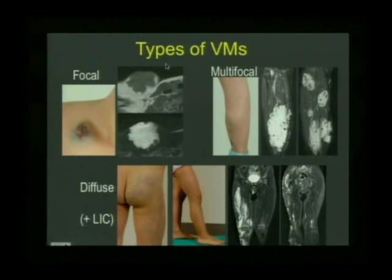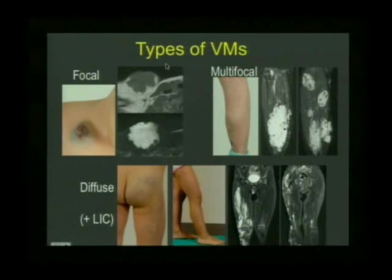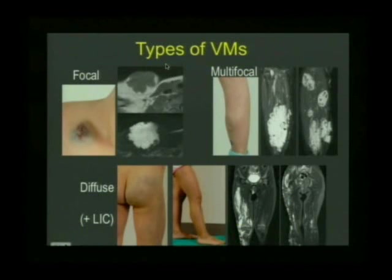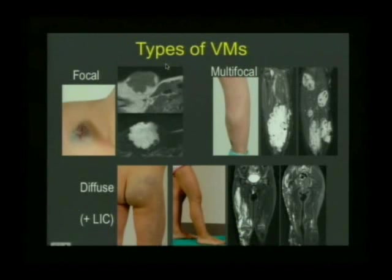When looking at an extremity, the first sequence I tend to look at is a coronal T2. It gives an excellent overview of the extremity, making it easy to localize things before going to look in more detail at other sequences and planes. The signal voids represent phleboliths, which give the clue along with the multi-lobulated appearance on T2-weighted MR.